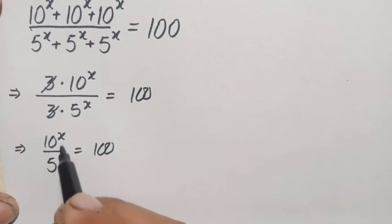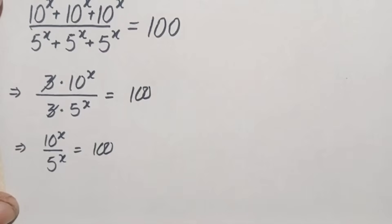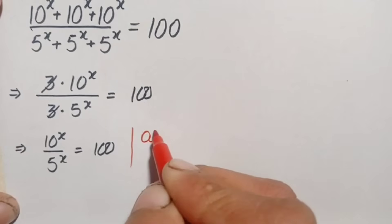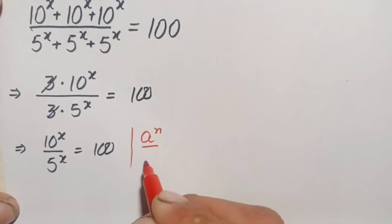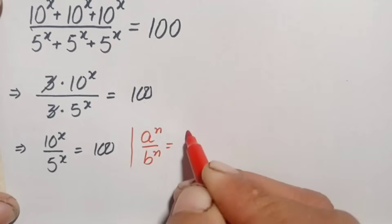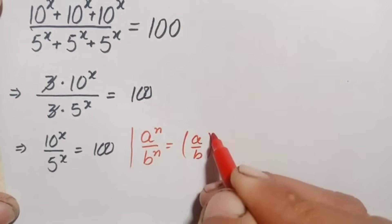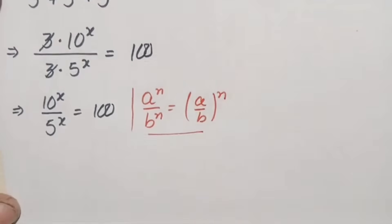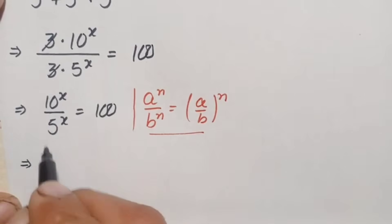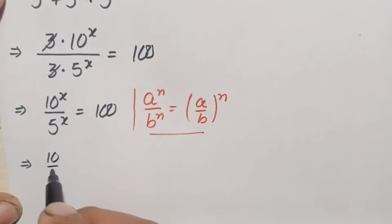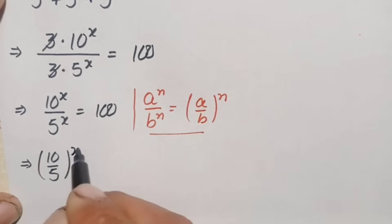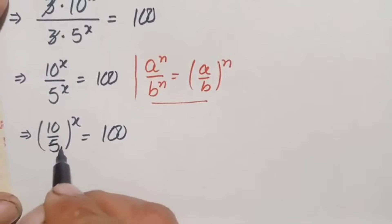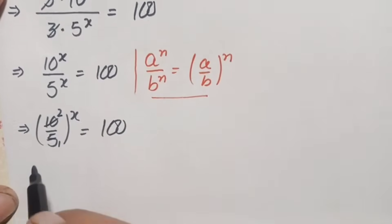Looking at the numerator and denominator, both numbers have the same power. So we will use an exponential identity for the same power: a raised to power n divided by b raised to power n equals a/b raised to power n. Using this identity, we divide the bases — 10 divided by 5 — and take the power out. Simplifying: 5 times 2 is 10, so this becomes 2 raised to power x, equal to 100.